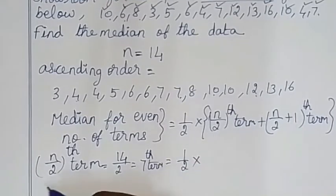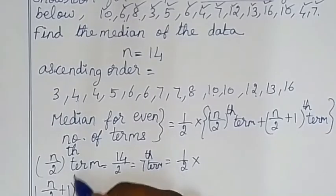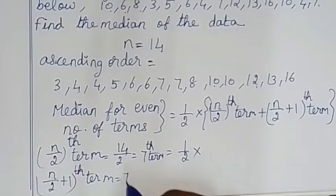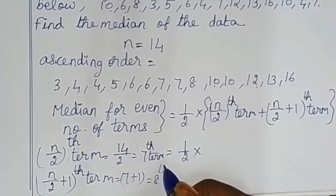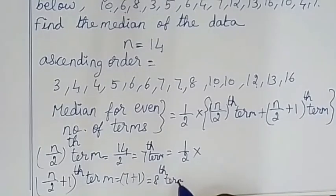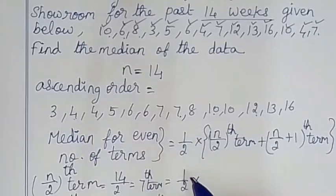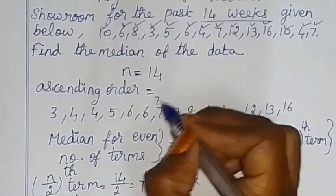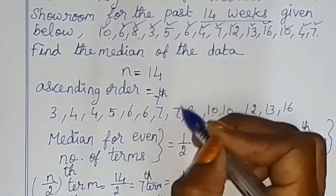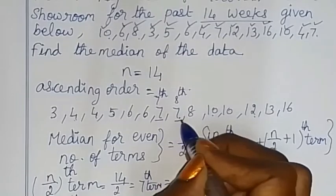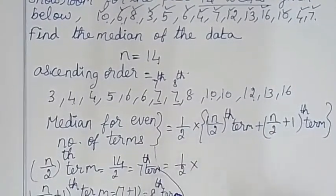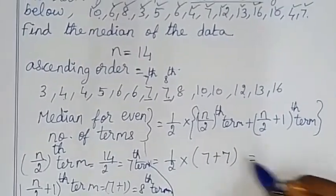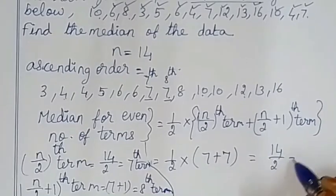And the (n/2 + 1) th term is 7 + 1 = 8th term. Arranging the data, the 7th term and 8th term are both 7. So median = (1/2) × (7 + 7) = 14/2 = 7. The median is 7.